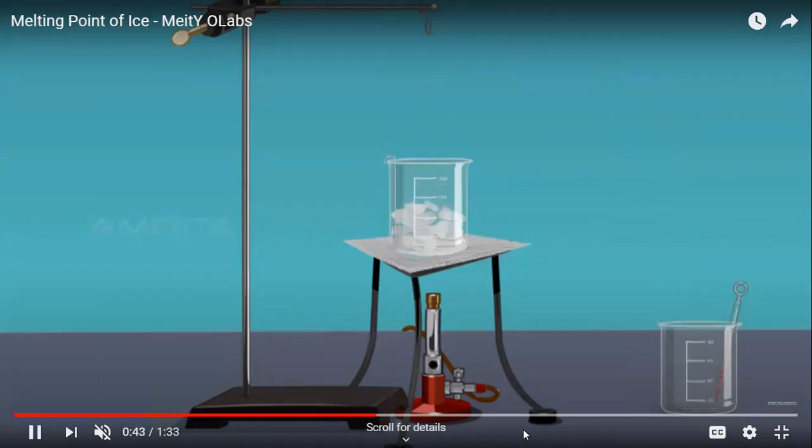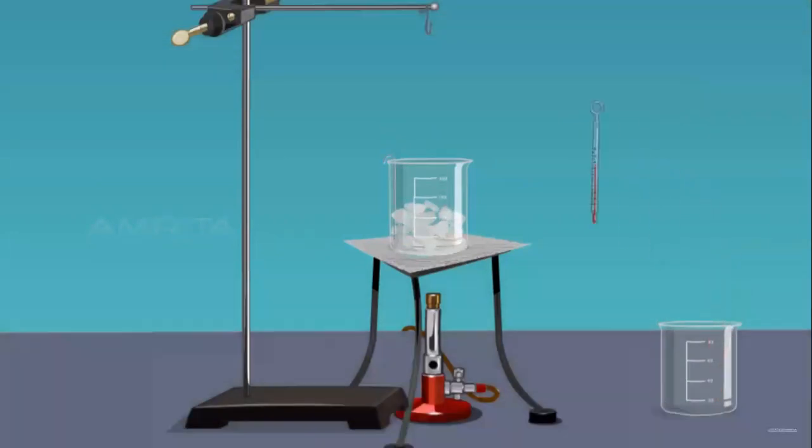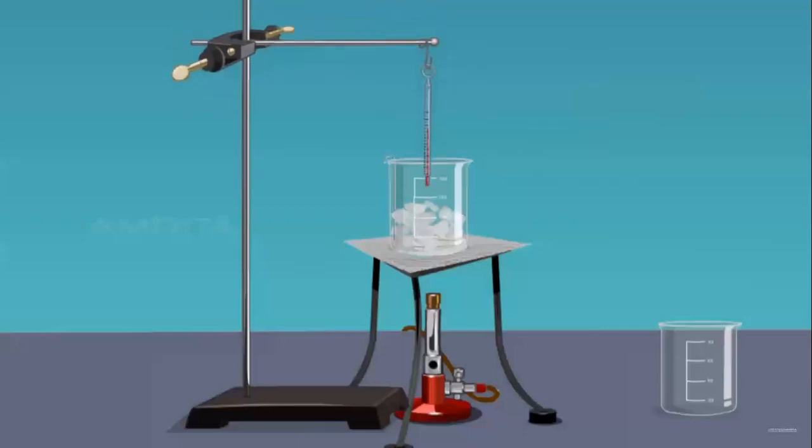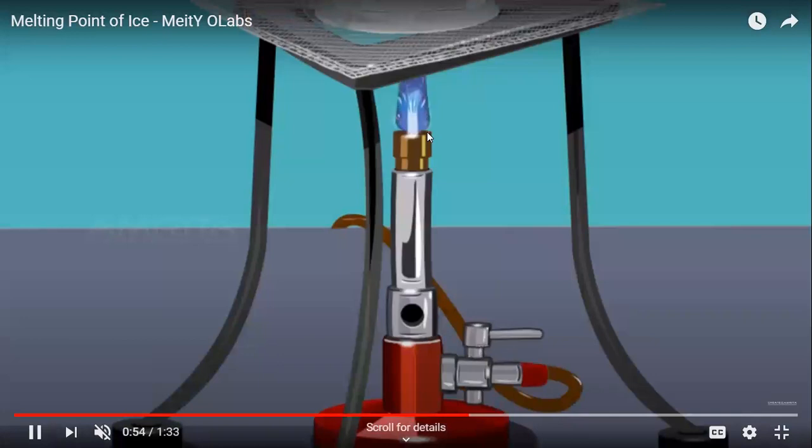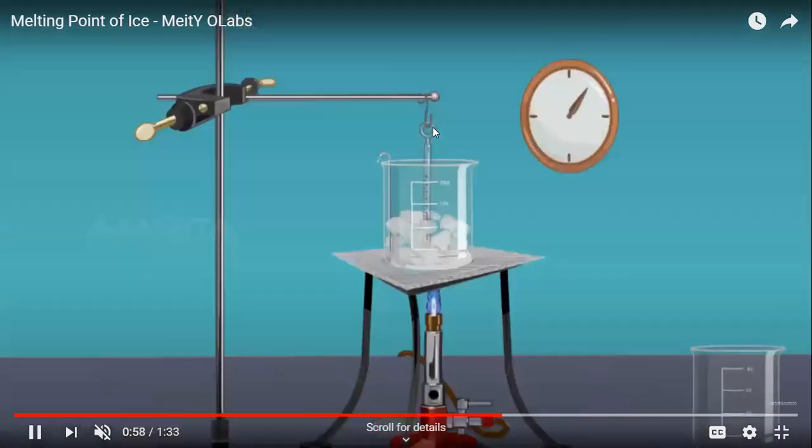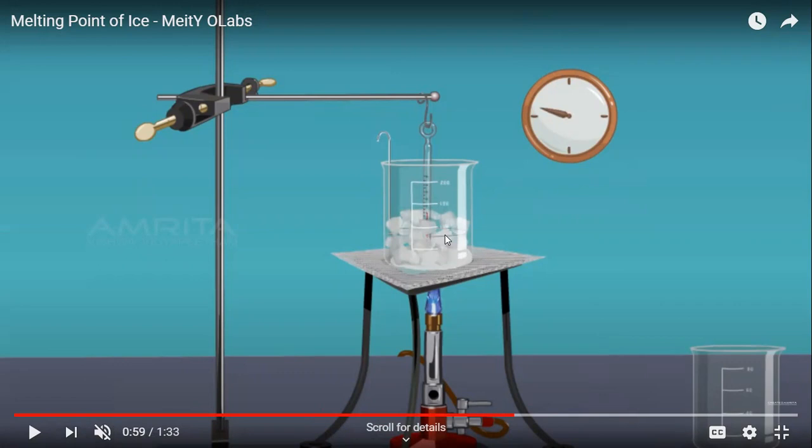Now I will place the stirrer inside the beaker and then I will place the thermometer inside the beaker. See, the thermometer is connected to the clamp stand. So you have to be very careful and then we will switch on the burner. Now one more thing, when you are placing the thermometer, you have to take all these precautions. First thing is, you will clamp the thermometer with the help of the clamp stand.